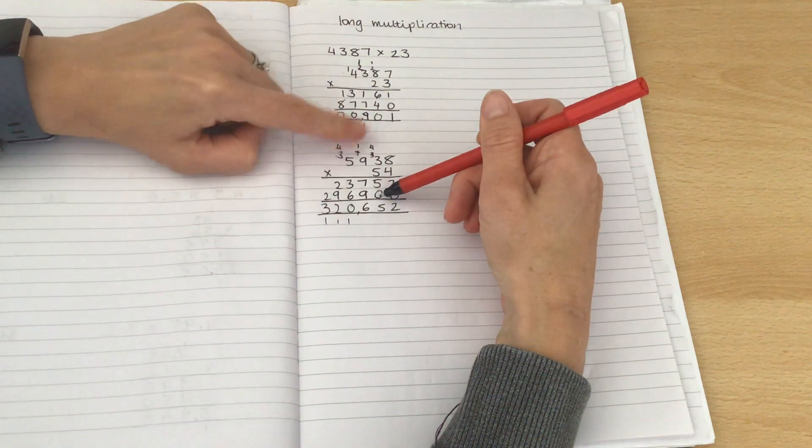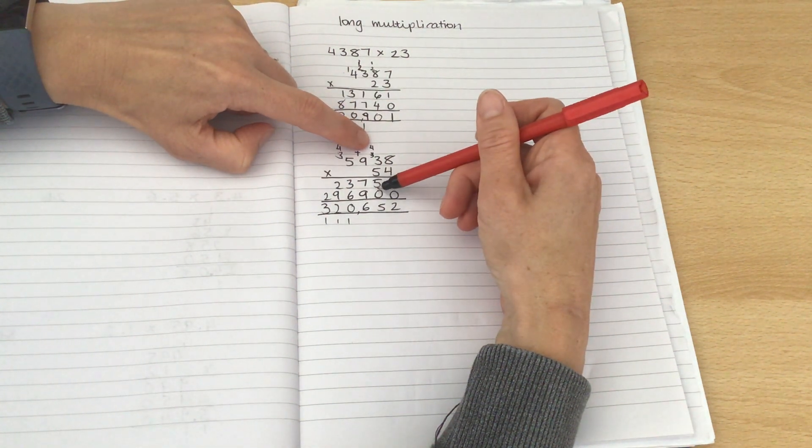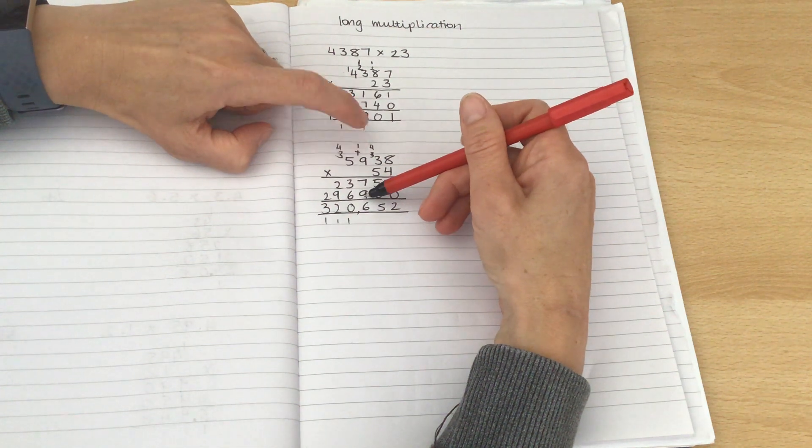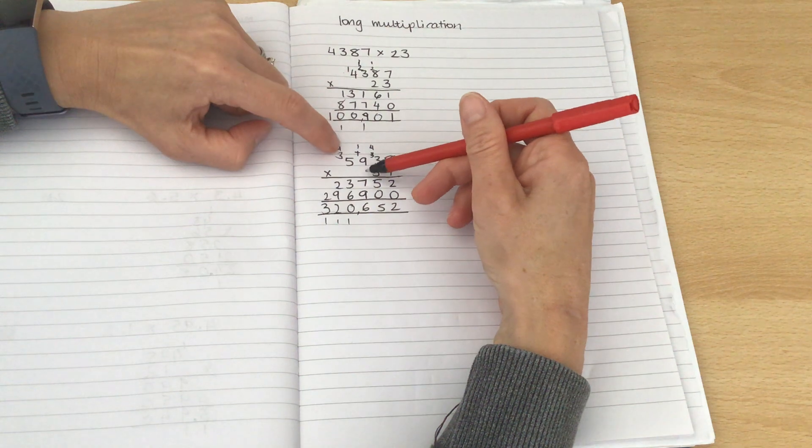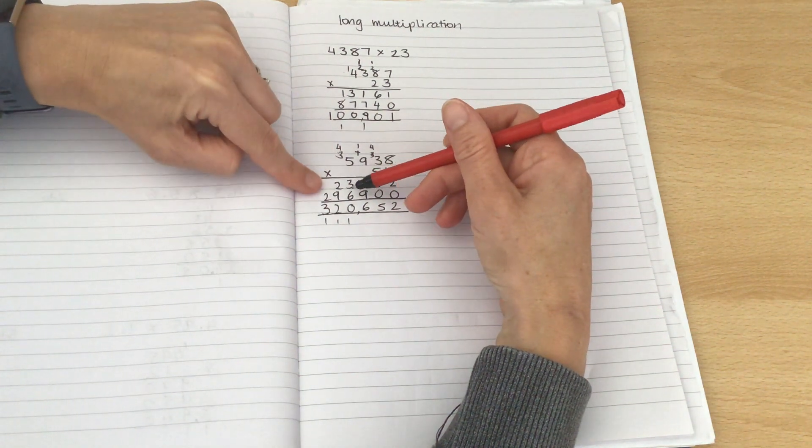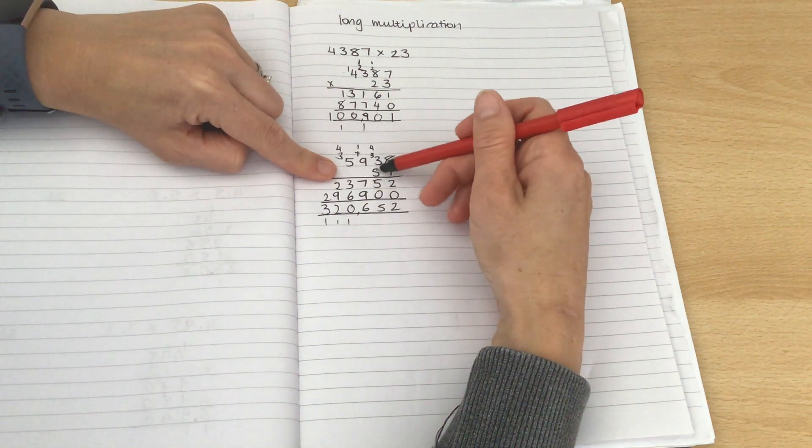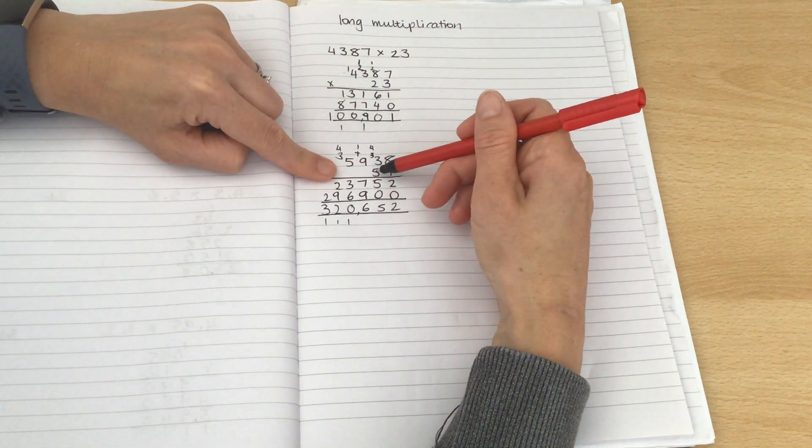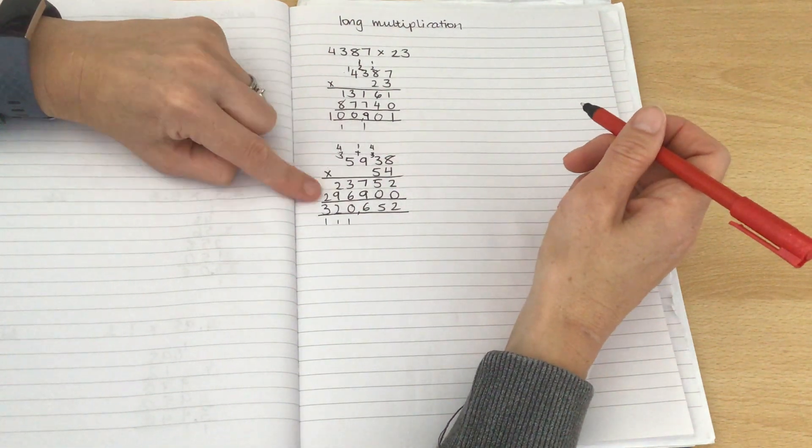0 down. 5 times 8 is 40. 0 goes down. 4 goes up. 15 and 19. Excellent. 35, 36. Excellent. 25 and 3. 25. Have I made a mistake here? Oh, no, it was 5 times 9 was 45, wasn't it? 5 times 5 is 25. Add the 4 is 29.